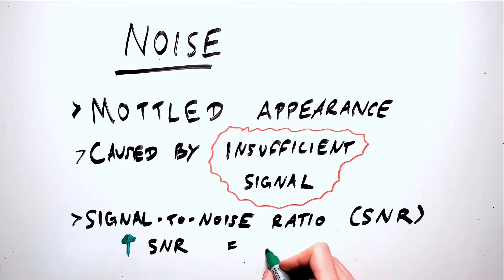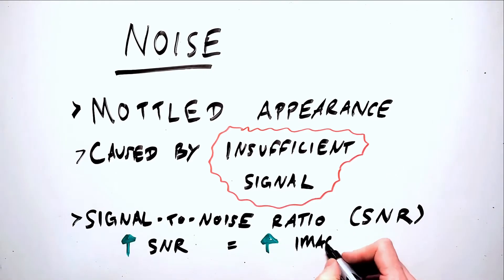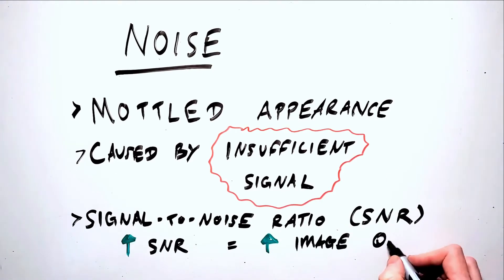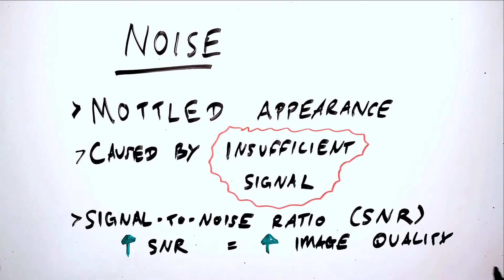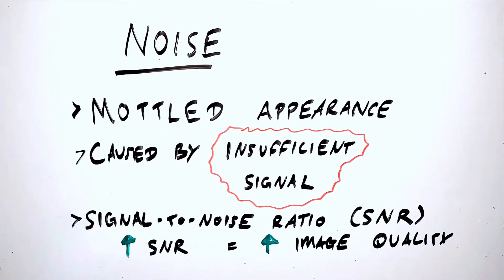This is described as the signal-to-noise ratio. A high signal-to-noise ratio means that we have a relatively higher amount of true signal in our data, and a relatively lower amount of noise degrading our data.